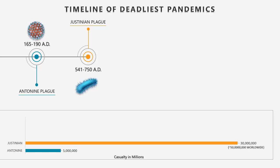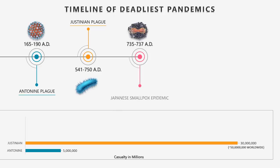At number 18: The Japanese Smallpox Epidemic. It was a major smallpox epidemic that afflicted much of Japan. The virus that caused it was the variola virus. Over 2 million people died due to this outbreak — approximately one-third of the entire Japanese population.